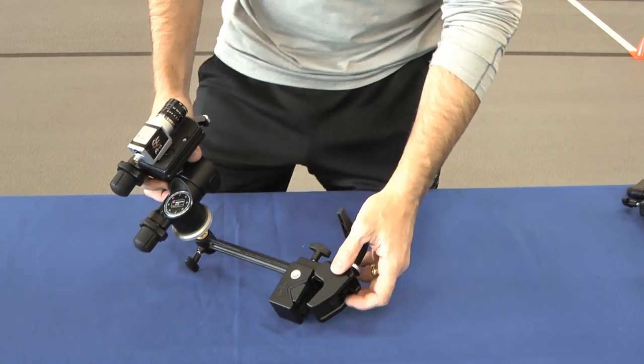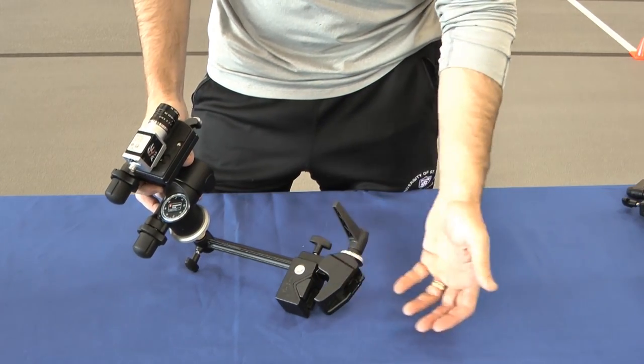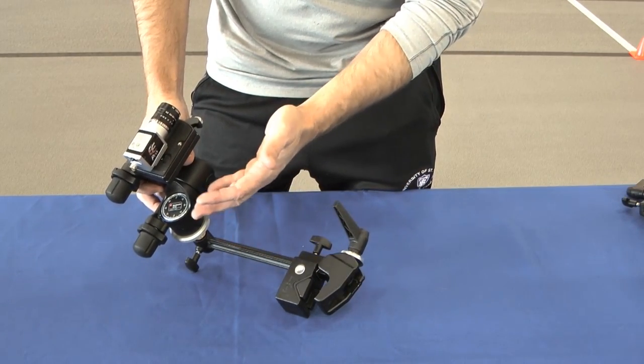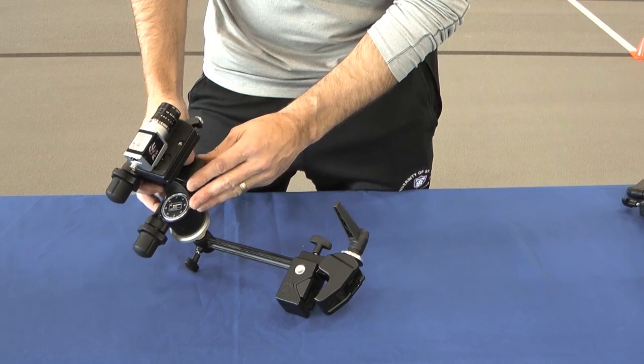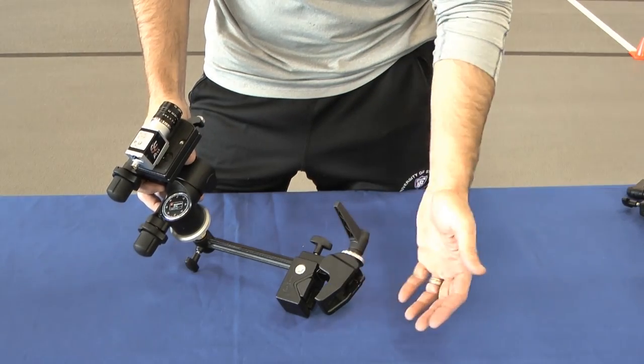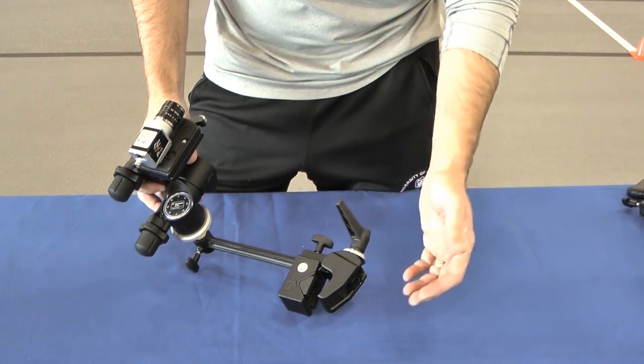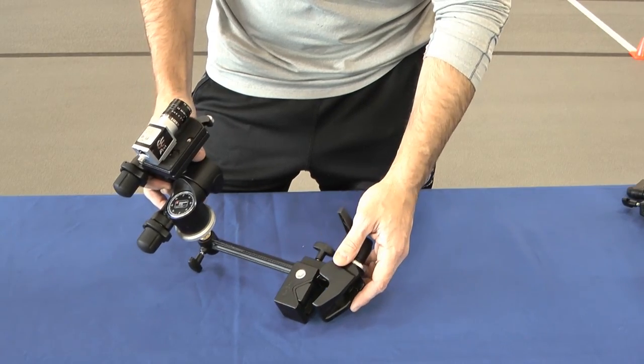Here we have the premium mounting kit that has an extension arm, the adjustable geared ball head, and the clamp which is great for attaching it to a ladder or a pole to position the camera precisely on the finish line.